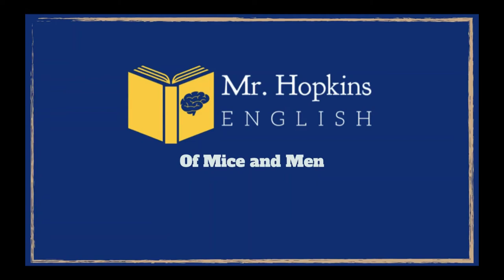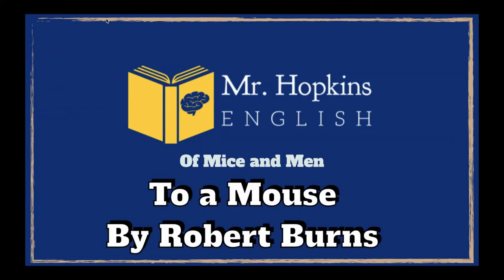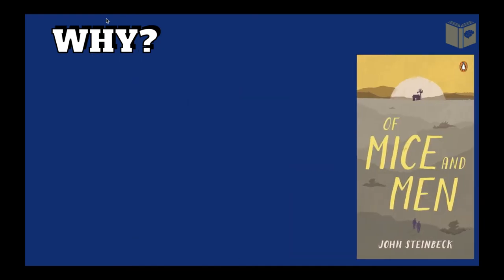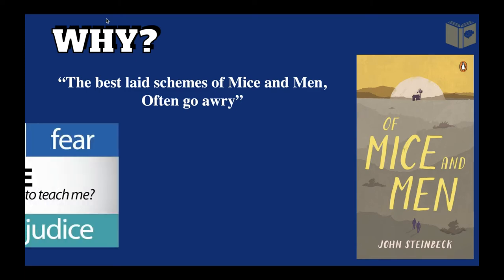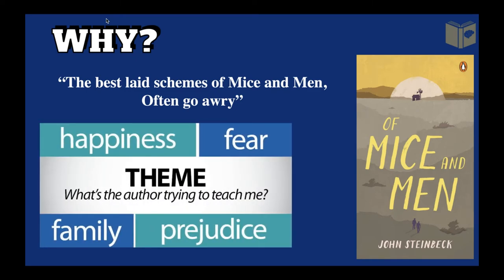In this 'Of Mice and Men' video we're going to be looking at the poem 'To a Mouse' by Robert Burns. We're doing this because 'Of Mice and Men' by John Steinbeck gets its name from that poem. One of the lines reads: 'The best-laid schemes of mice and men often go awry' — or in modern translation, often go wrong.